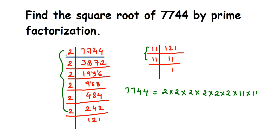Once we've written all the prime factors, we need to pair them. If the number is a perfect square, you will get proper pairing with no factor left out. So I can pair these two 2s, pair these two 2s, pair these two 2s, and pair the two 11s. Pairing means forming a set of two — if any factor is left unpaired, the number is not a perfect square and you cannot find an exact square root.